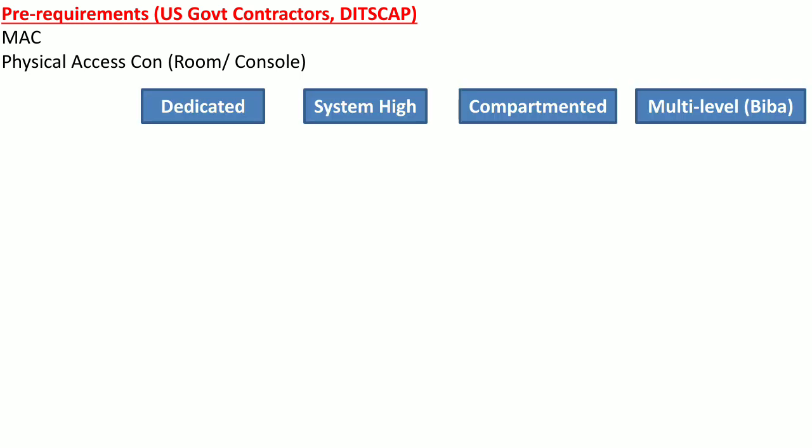There are four security modes of operations in which an information system gets deployed. These security modes are dedicated, system-high, compartmented, and multi-level security modes. An information system may get deployed in any of these security modes depending upon the security requirements of an organization.